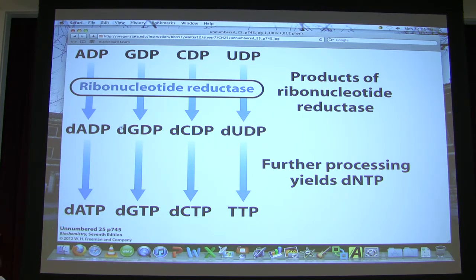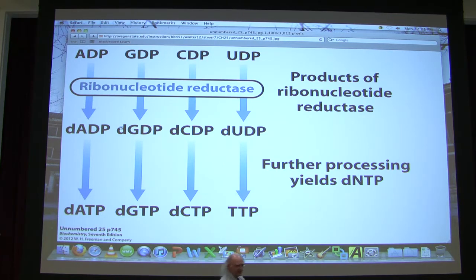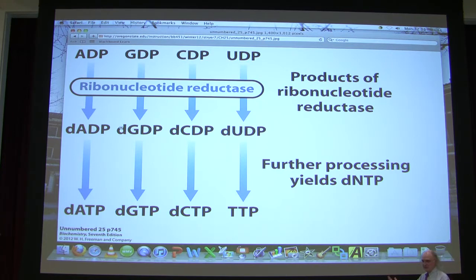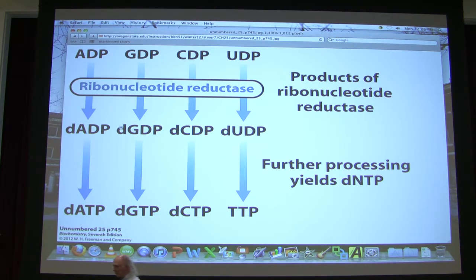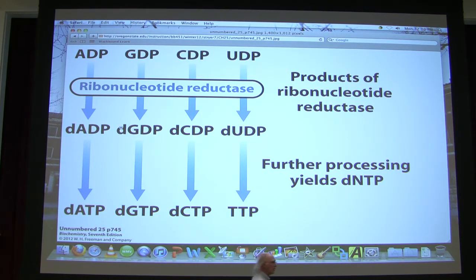There's an interesting hook: the deoxyribonucleotides you see here — you can put a D on there. The reason many don't is that thymidine nucleotides don't appear in RNA, so it was felt there's no need for a D. But in fact some RNAs have ribothymidine, so I think we should write DTTP. The starting materials for making deoxyribonucleotides are nucleoside diphosphates: ADP, GDP, CDP, UDP.